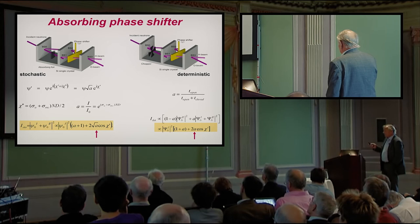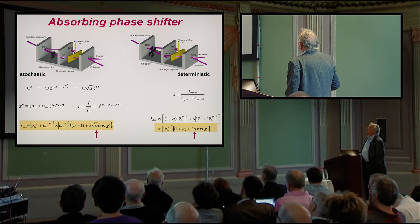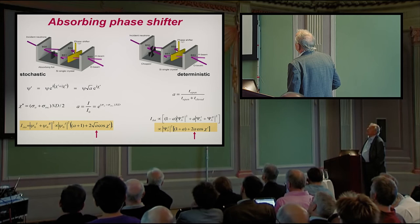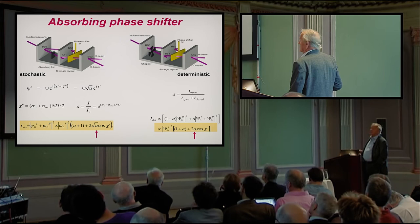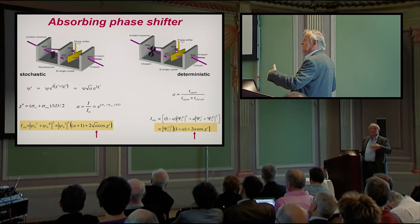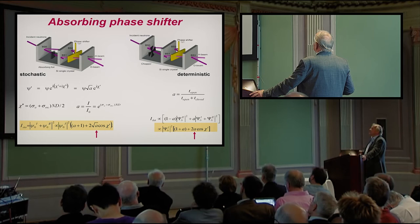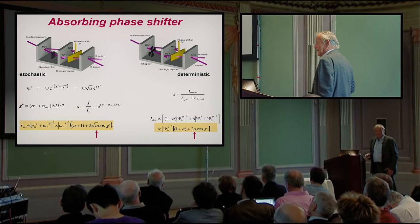And I want to show a few words on these weak measurements. That means usually you have here a phase shift where you rotate it and get the pattern. When you introduce an absorber, then you can easily calculate that the amplitude is reduced by the square root of the attenuation. And when you have a stochastic absorption, each neutron has the chance to be absorbed.